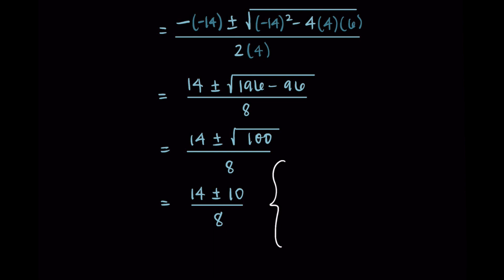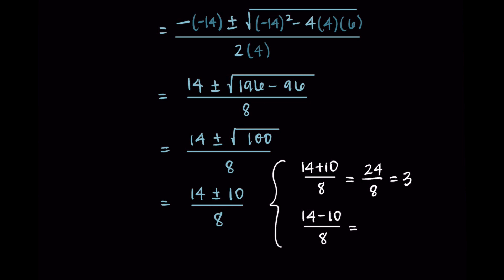I write this as two separate expressions: 14 plus 10 over 8, and 14 minus 10 over 8. Fourteen plus ten is 24, so I have 24 over 8, and 24 divided by 8 is 3. Then 14 minus 10 is 4, so I have 4 over 8, which simplifies to one half. My two values are 3 and one half.